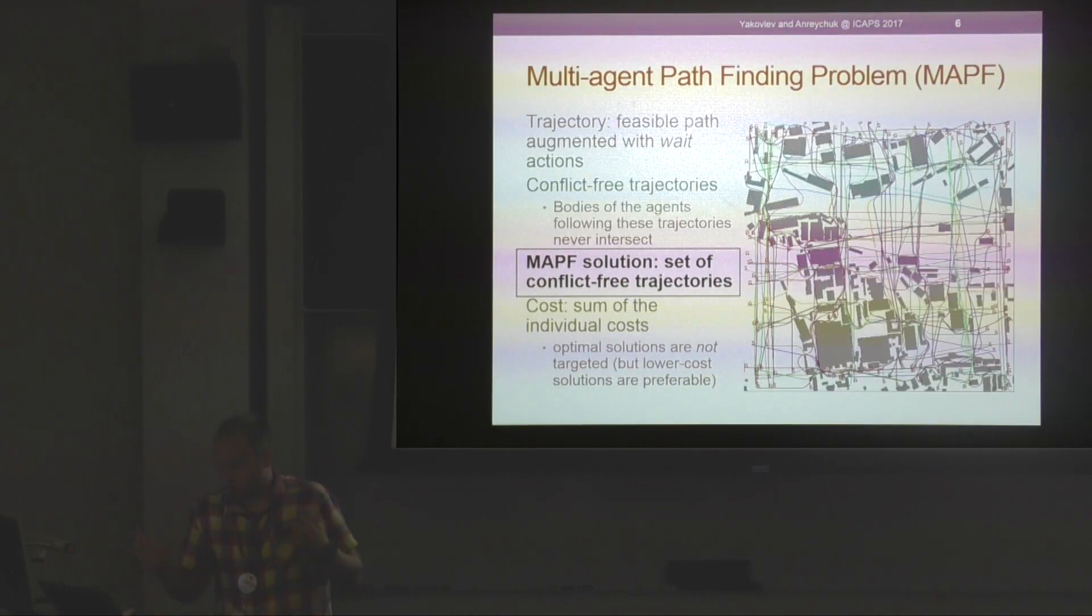The problem is basically to find a set of conflict-free trajectories given a set of start and goal locations. We're not limiting ourselves to finding optimal solutions, but obviously lower cost solutions are preferable, where the cost of the solution is the sum of the individual costs.